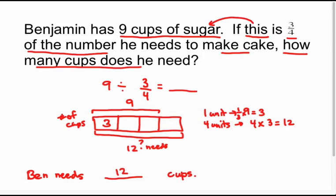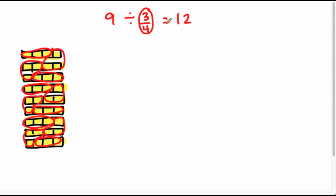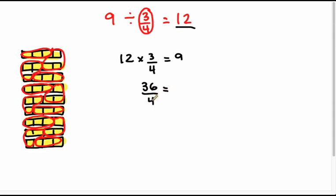That is the exact same quotient we arrived at with the previous problem. The two different interpretations give you the same quotient, though the models look slightly different. To check, understanding division means the quotient times the divisor should give the dividend. So we'll take 12 multiplied by three-fourths and see if we get nine. I have 12 groups of three-fourths: 12 times 3 makes 36, and 36 fourths is 36 divided by four. Is 36 divided by four the same value as nine? That's what the equal sign means — the same value. Yes, 36 fourths equals nine, confirming our answer.